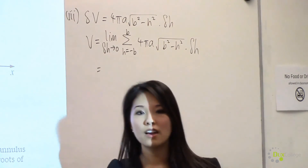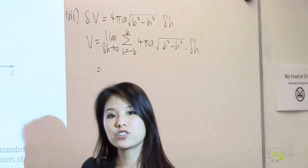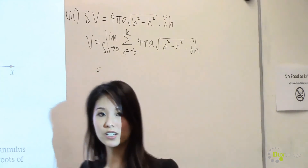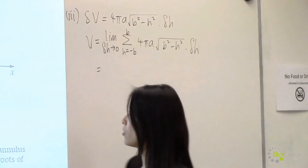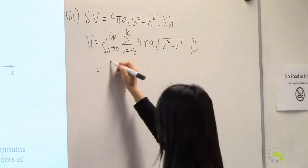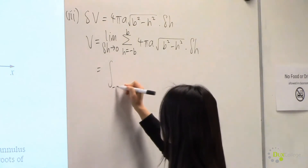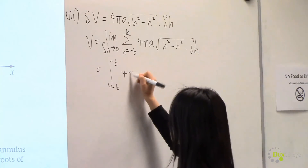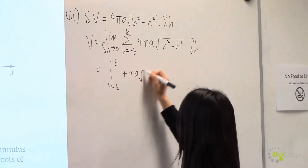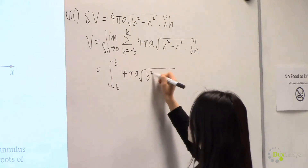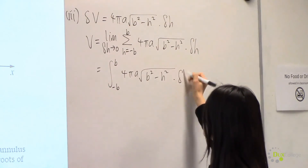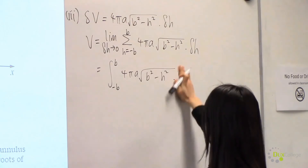To find the entire volume, we take the limit as delta h approaches 0, summing from h equals minus b to b. This expression is equivalent to the integral from minus b to b of 4πa times the square root of b squared minus h squared, dh.